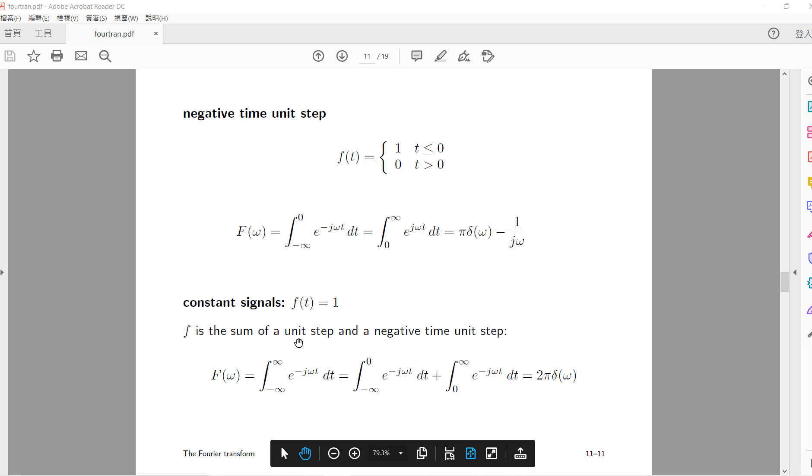So if you do a constant signal Fourier transformation, you get 1, you put in here, then you get this 2 pi delta omega. So now we use j as the imaginary unit.